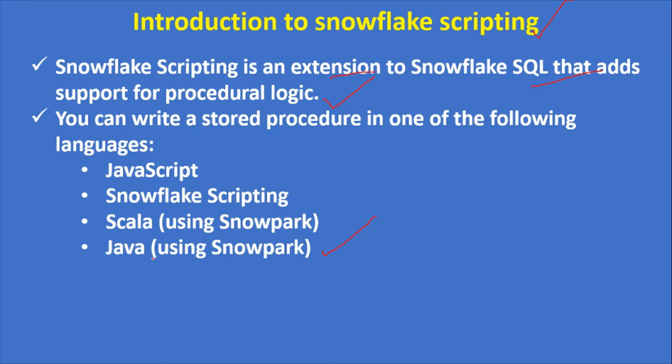Why are these many different types of languages available? Because different people are familiar with different languages. A person familiar with Java may find writing a stored procedure using Java very easy, since he has been working with Java. Similarly, people coming from Scala find Scala easier, and people coming from procedural languages like PL/SQL find Snowflake scripting very easy.